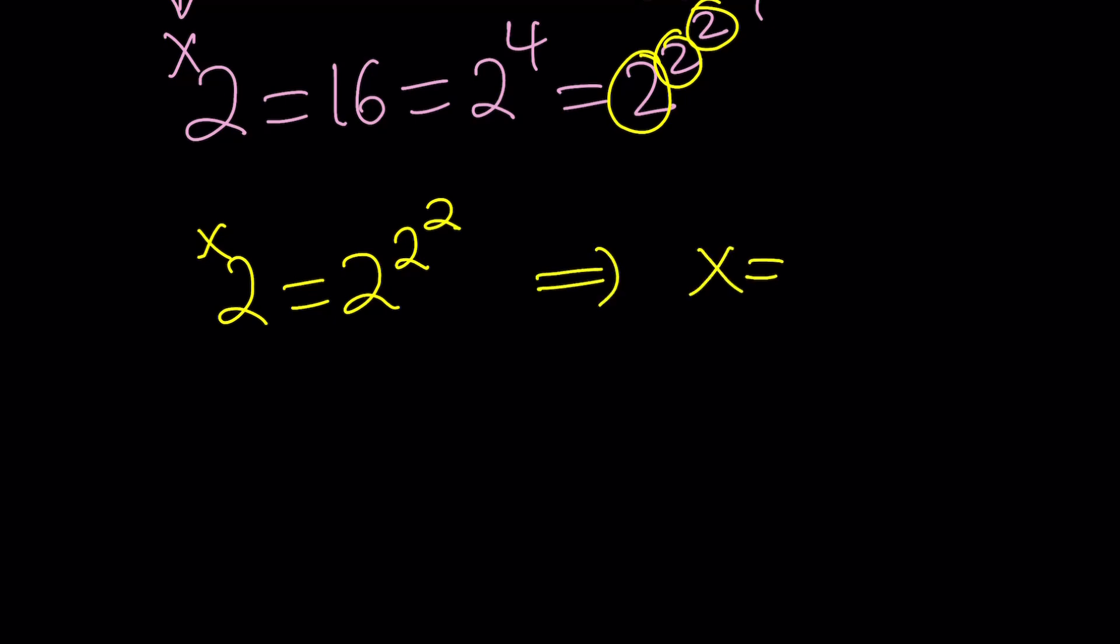Because we were trying to solve for x, and we found x by looking at the number of 2s. Because this means that. In other words, this means 2 to the 2 to the 2. Right?